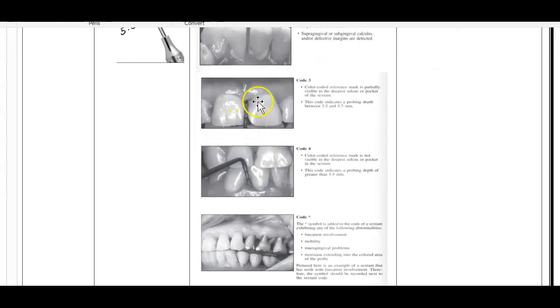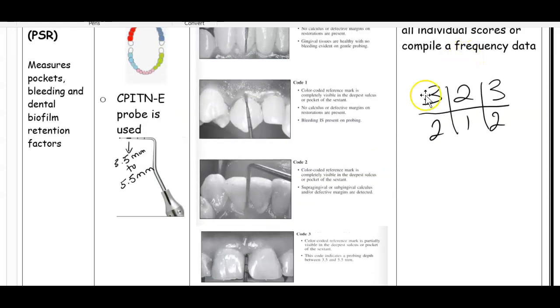Code three - look at where the band is. In code three, the band is partially visible. If the band is partially visible, the readings could be anywhere from 3.5 millimeters and beyond, but not past 5.5 millimeters. If you can see half the band, it's given code three. Section one and section three have been given code three because I noticed half the band was visible.